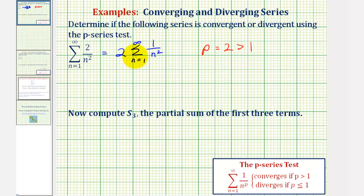So if this infinite series converges, two times this convergent series also converges. And therefore the original series, the summation from n equals one to infinity of two divided by n squared, converges by the p-series test with p equals two, which is greater than one.